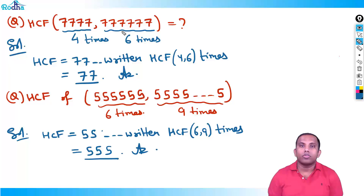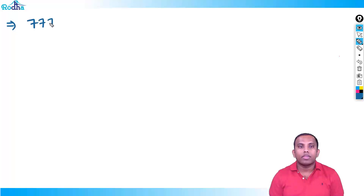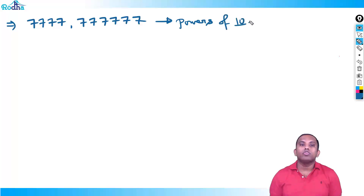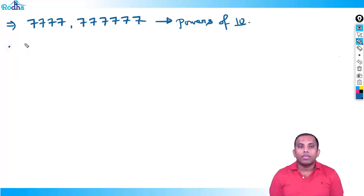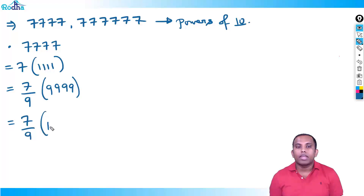Now let's prove this. Take HCF of 7777 (4 times) and 777777 (6 times). We write 7777 as 7 × 1111, then multiply and divide by 9 to get (7/9) × 9999 = (7/9) × (10^4 - 1). Similarly 777777 = (7/9) × (10^6 - 1).